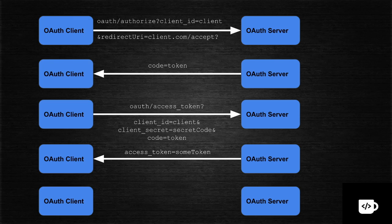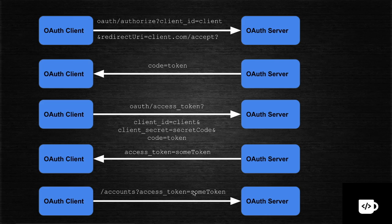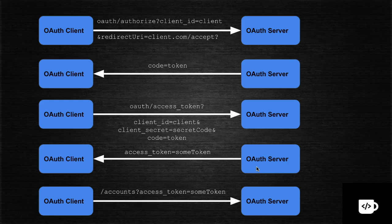Now Citibank has authenticated your details and authenticated itself with Facebook, so it has all your access privileges. Citibank can now use that access token to retrieve your account details from Facebook. Citibank will use this access token for every request to access your details inside Facebook — whether account information or profile information. This is the authentication server phase, and where the token is used to access data is called the resource server.